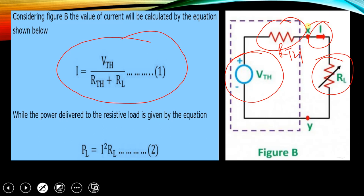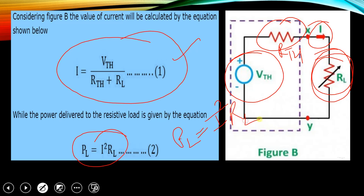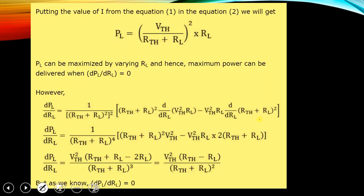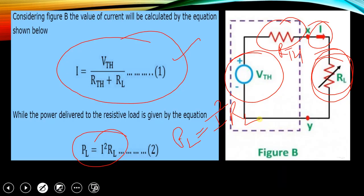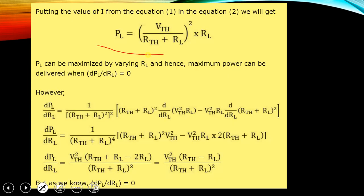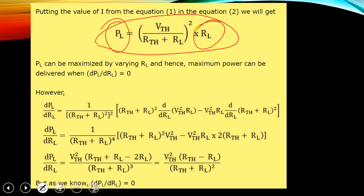After finding the value of I, we find out the power. The power delivered to the resistive load is given by PL = I² × RL. Substituting the value of I, the equation becomes PL = (Vth / (Rth + RL))² × RL. This value of PL can be maximized by varying the value of RL, which is why we use a variable load resistance — so maximum power can be delivered.